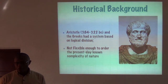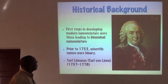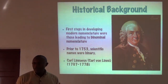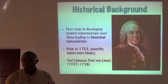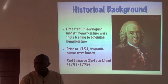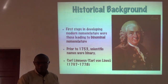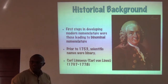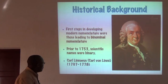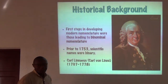The first steps in developing modern nomenclature led to binomial nomenclature. Prior to 1753, scientific names were binary in that a clear distinction was made between the genus name and the specific name, but a genus name could be made up of several words, and the species name could also be a very long phrase. The present system we owe to a Swedish physician who was also a botanist and zoologist — a knowledgeable person named Carolus Linnaeus. I'm sure everyone here knows who Carl Linnaeus was.